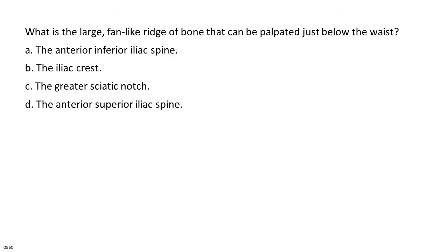What is the large, fan-like ridge of bone that can be palpated just below the waist? A. The anterior inferior iliac spine. B. The iliac crest. C. The greater sciatic notch. D. The anterior superior iliac spine.